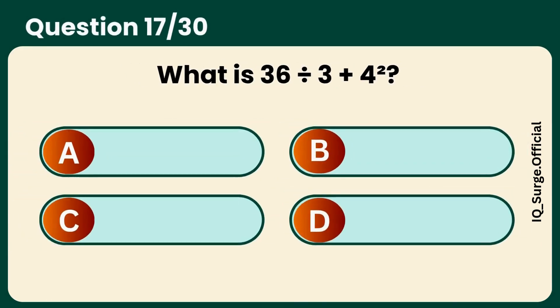What is 36 divided by 3 plus 4 squared? Answer C, 28.